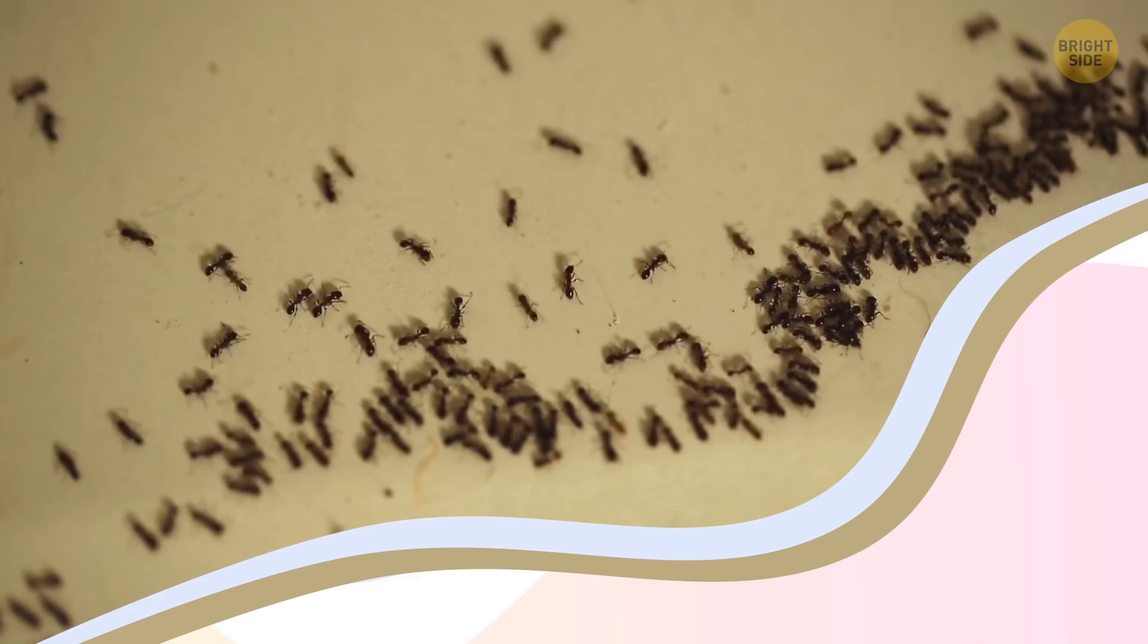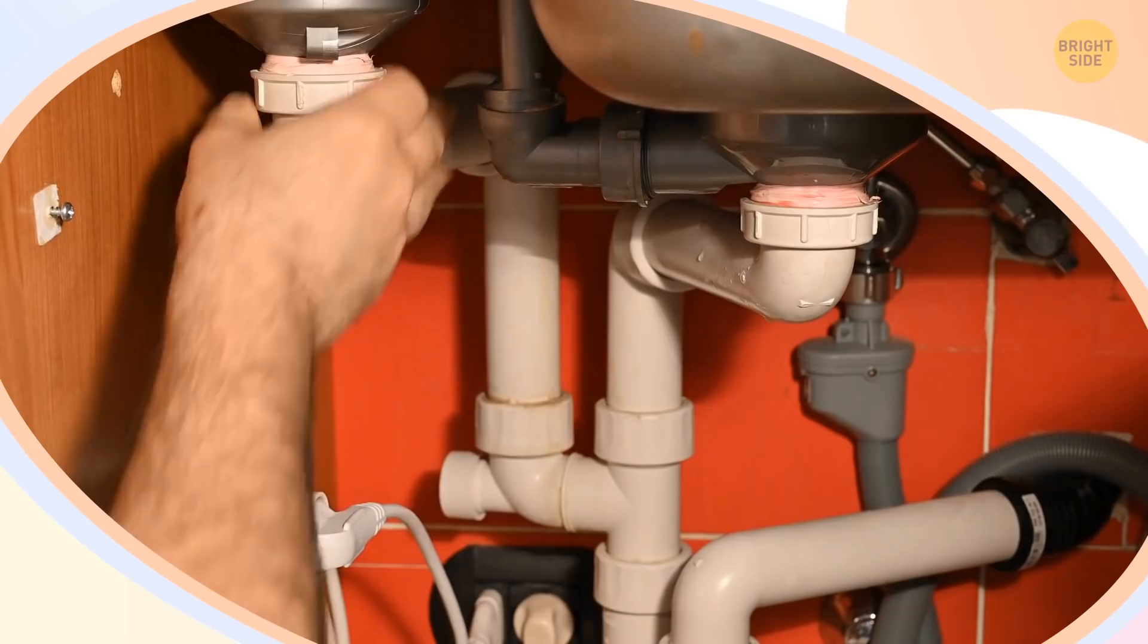High humidity. Pests love to set up camp in moist and warm places. You might find them in your basement, bathroom, or in the kitchen around the sink area. To control the humidity, make sure your drainage system is working correctly and that there aren't any leaks. You can also buy a humidistat to check the humidity levels in your home and install a dehumidifying system if needed.